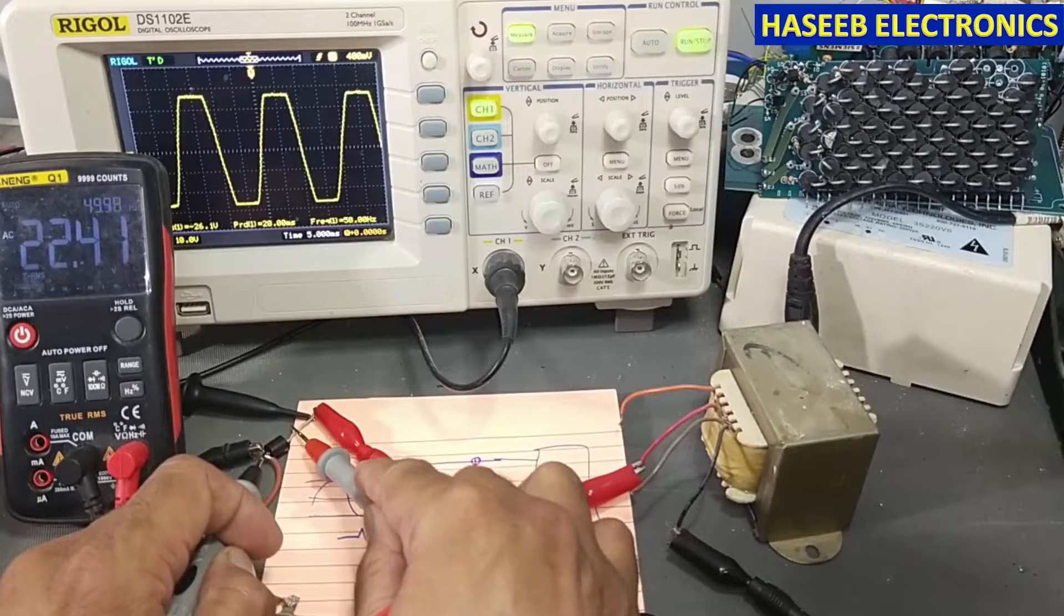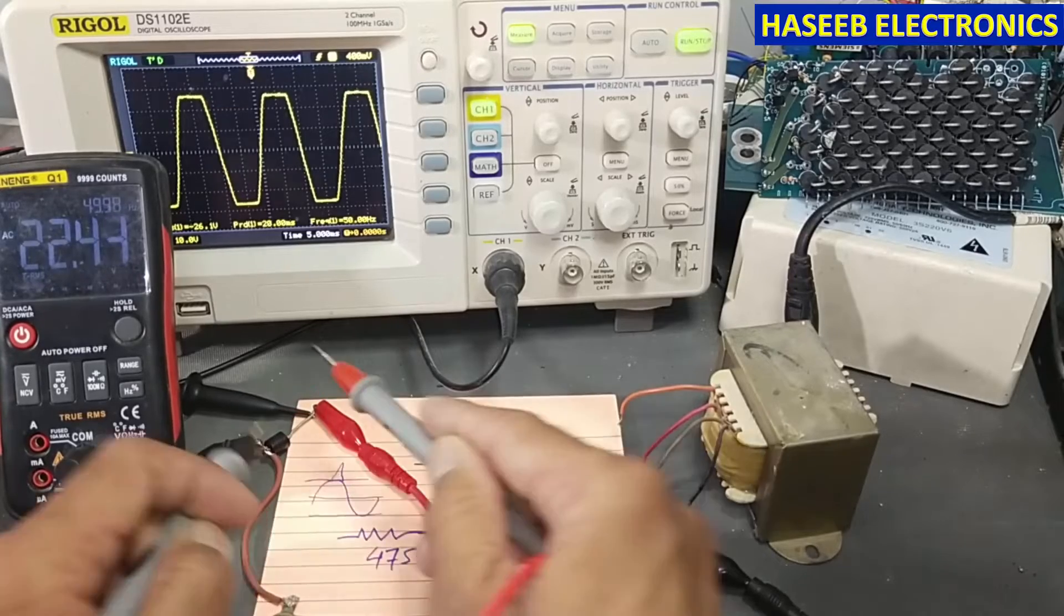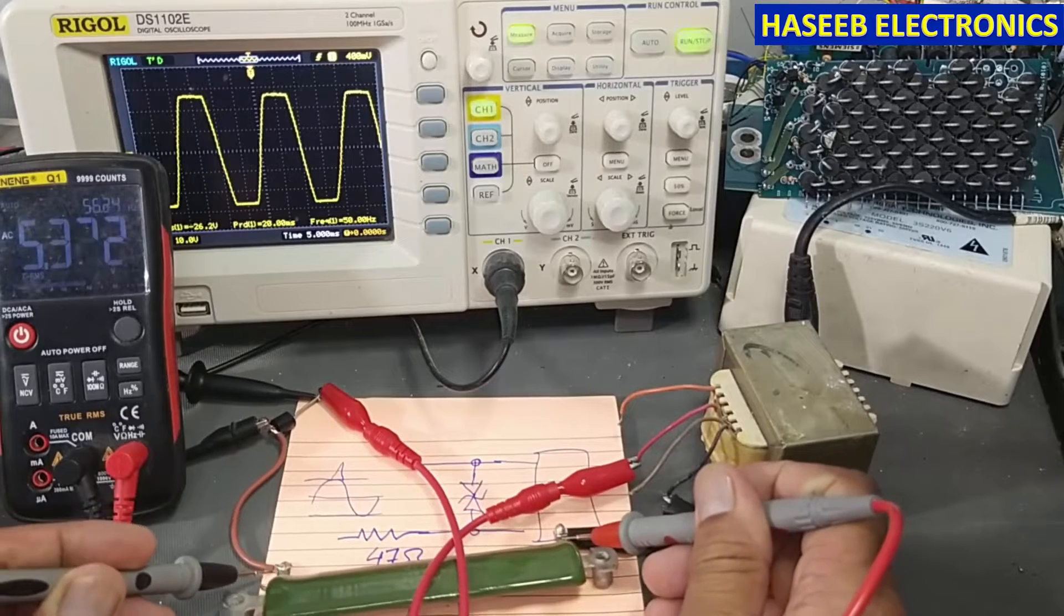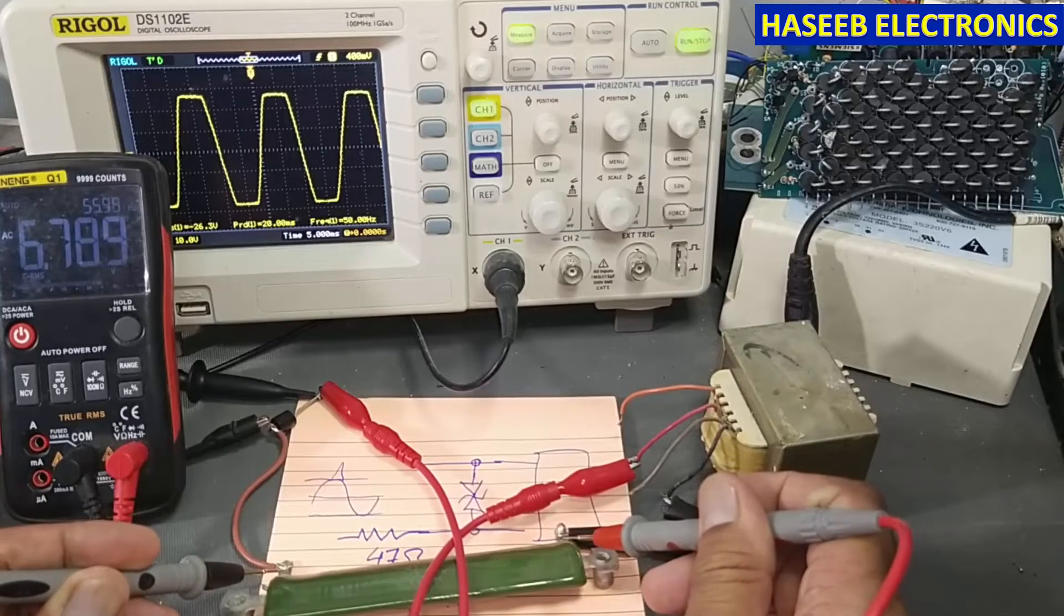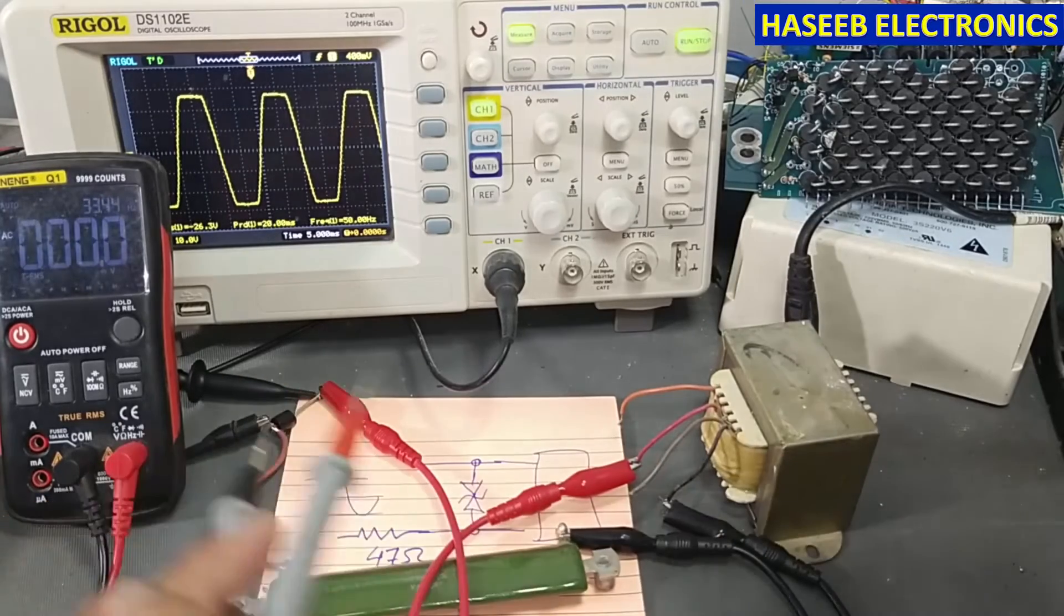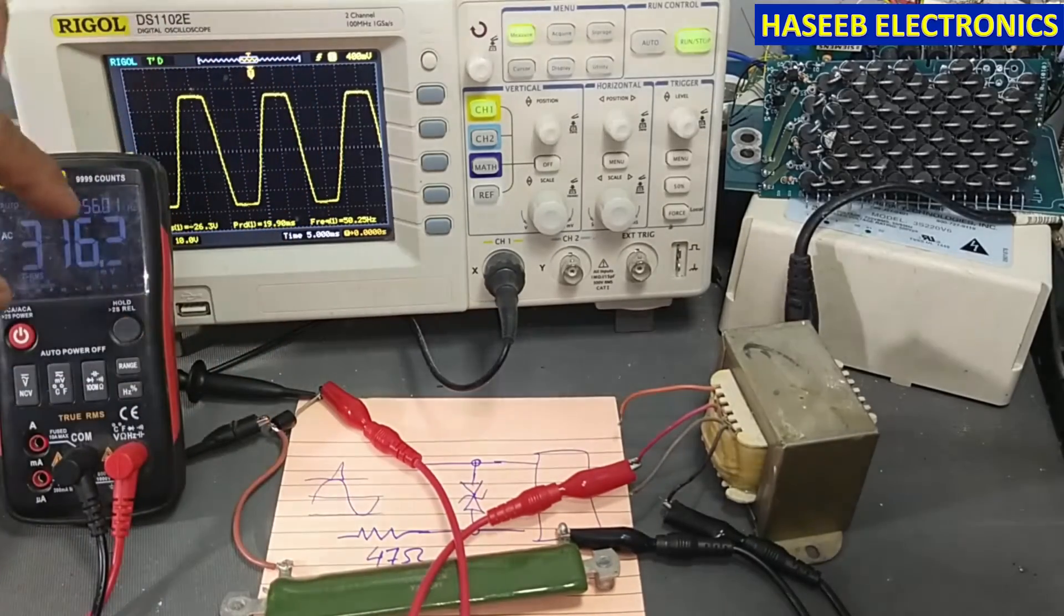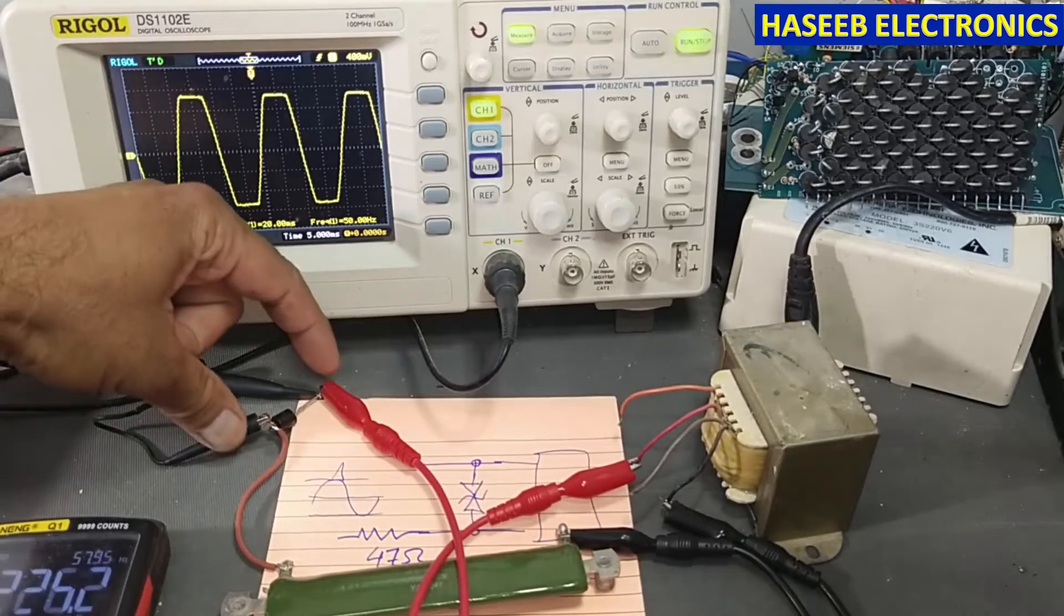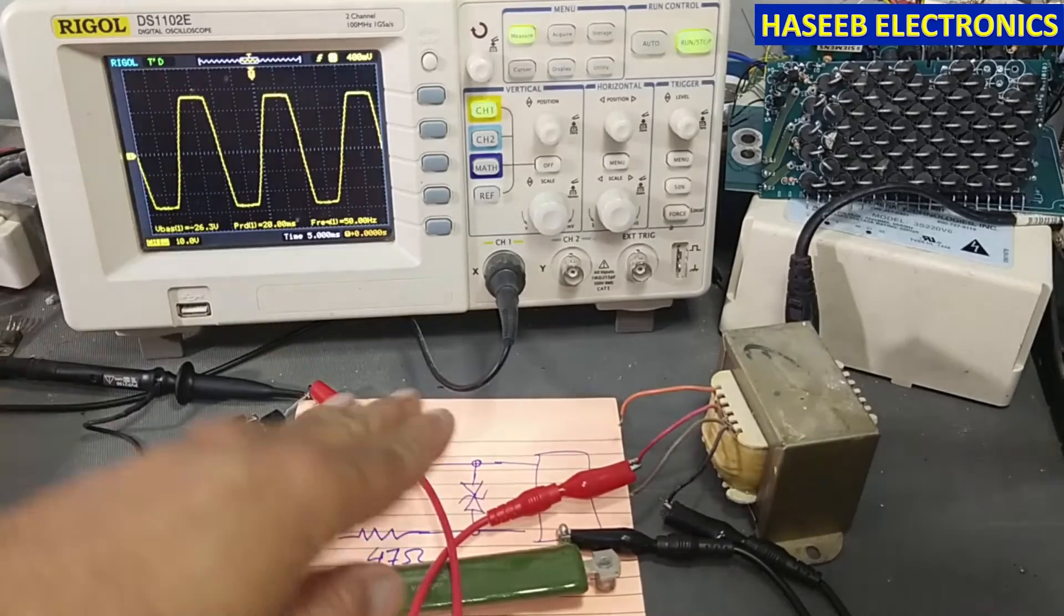This voltage is across this junction, and the remaining voltage is being dropped at this resistor. So it will allow only 22 volts to pass to the next circuit. Other voltage will be clipped off.